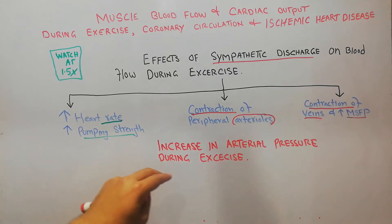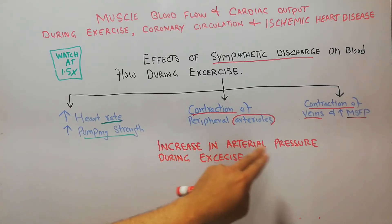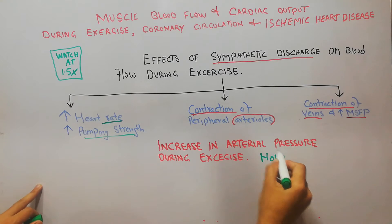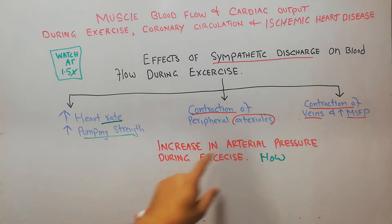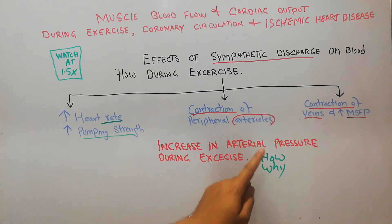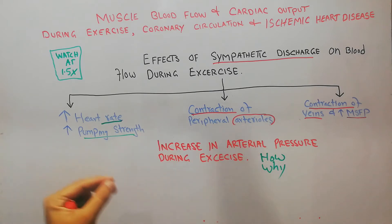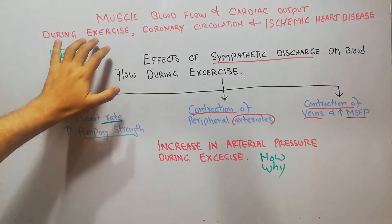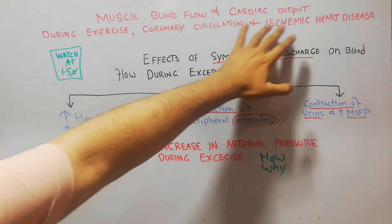Today in this lecture we are going to discuss increase in arterial pressure during exercise — how it occurs and why it is important. We have started our new chapter about muscle blood flow and cardiac output during exercise, coronary circulation and ischemic heart disease.